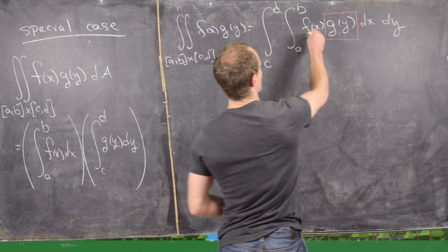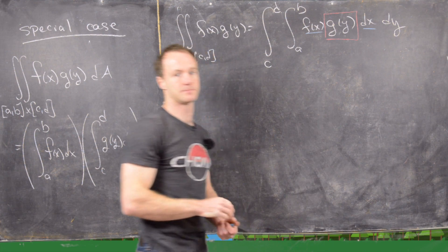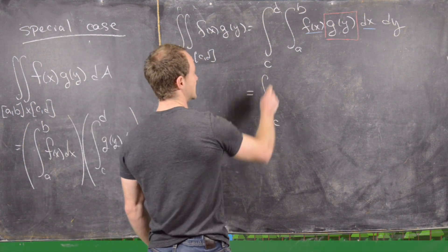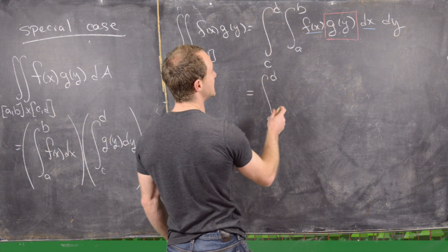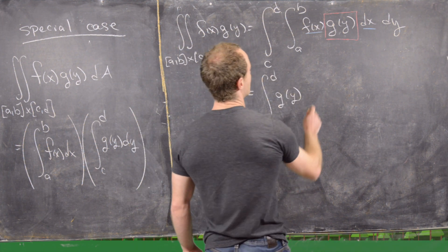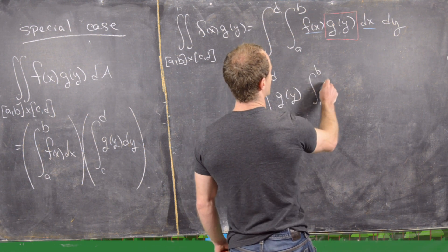But now notice that this g(y) is a constant with respect to the x integral. So what that tells us is that we can write this as the integral from c to d of g(y), and then inside of this is going to be the integral from a to b of f(x) dx.